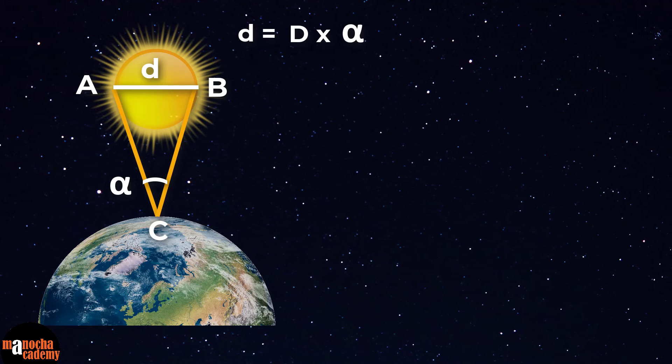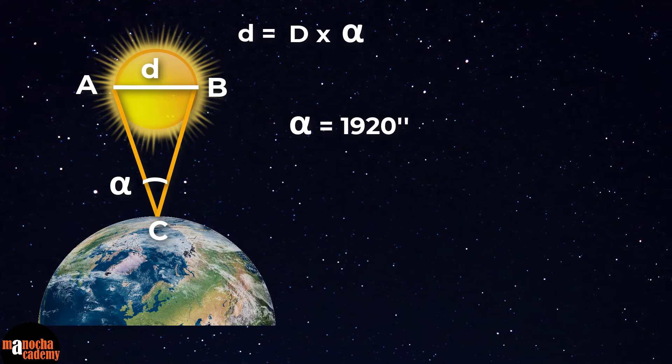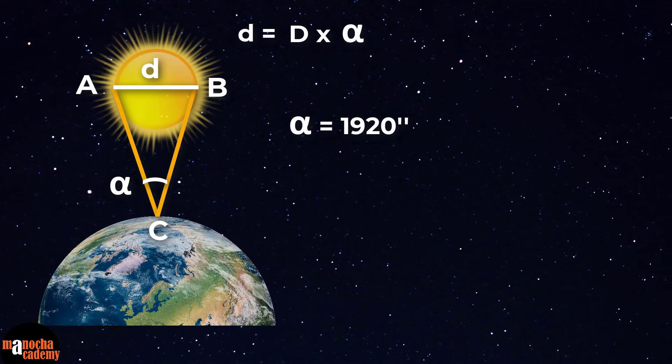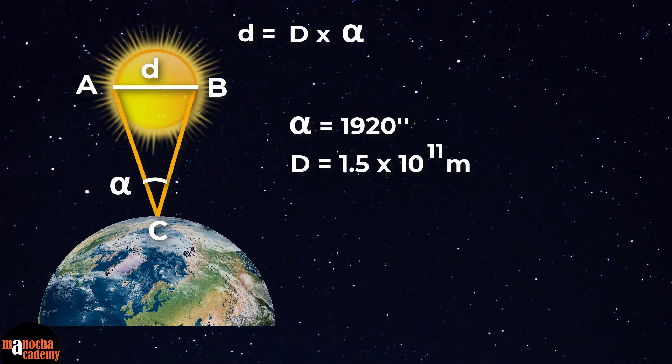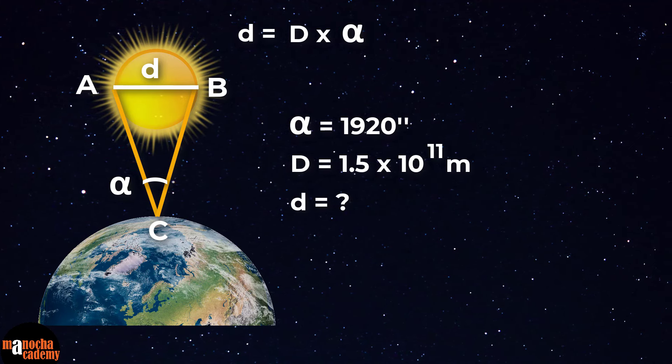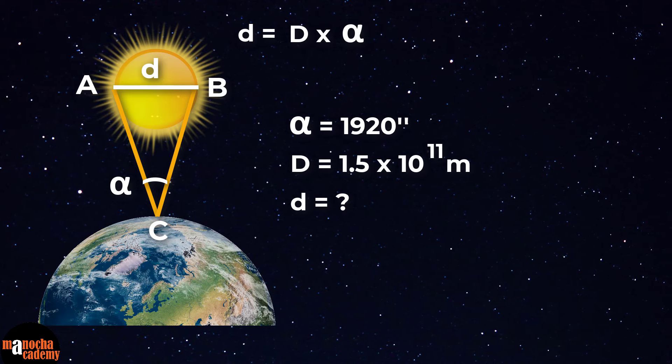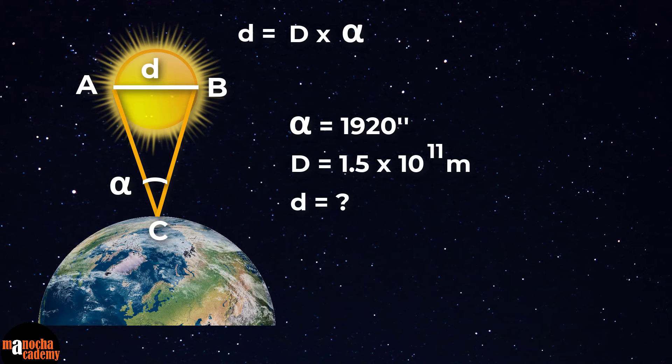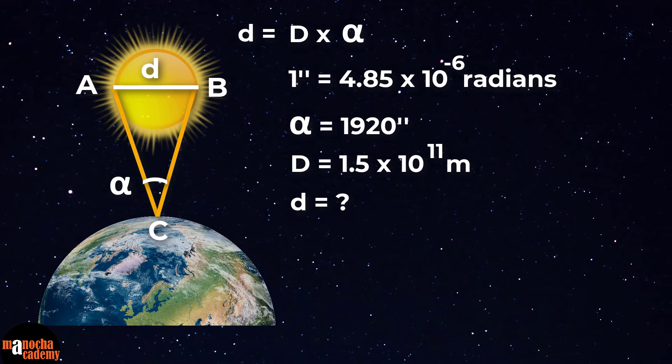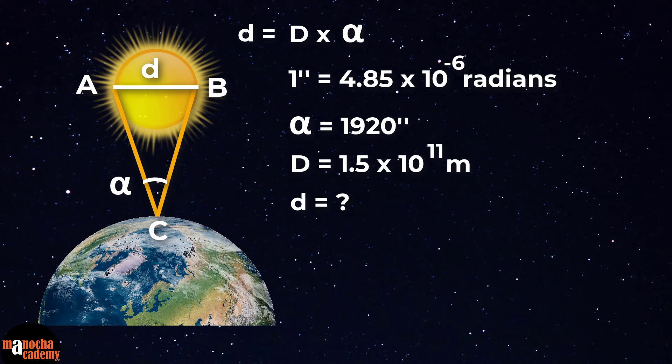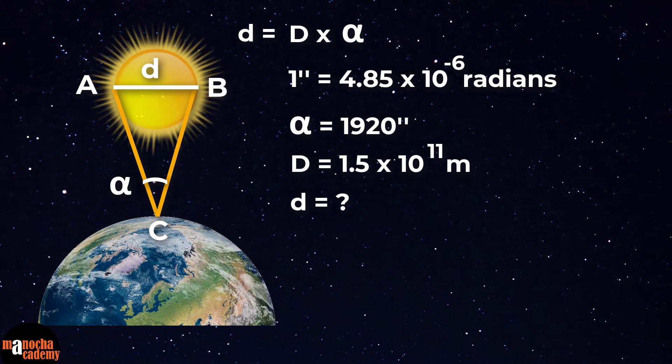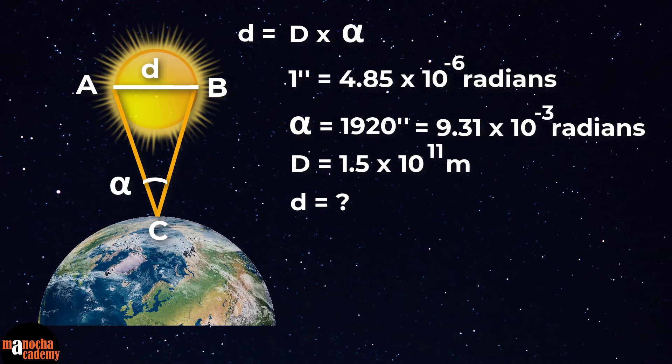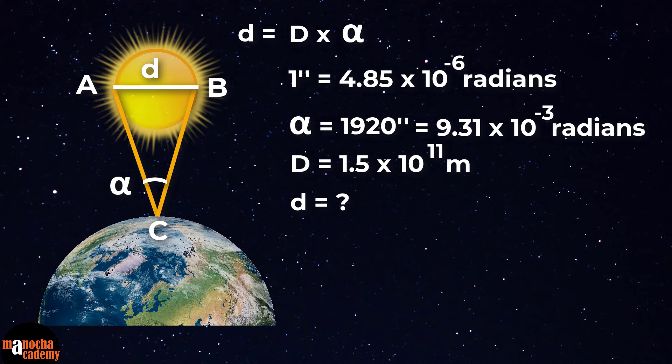Let's say the sun's angular diameter is measured to be 1920 seconds. Now the distance of the sun from the earth is 1.5 times 10 to the power 11 meters. So what will be the diameter of the sun? Remember the sun's angular diameter alpha is 1920 seconds, which you can convert into radians. Since 1 second is 4.85 times 10 to the power minus 6 radians, we can convert this to radians by multiplying with this number.